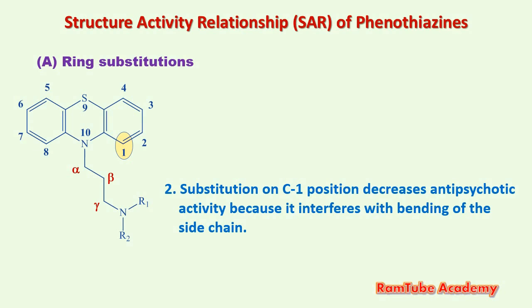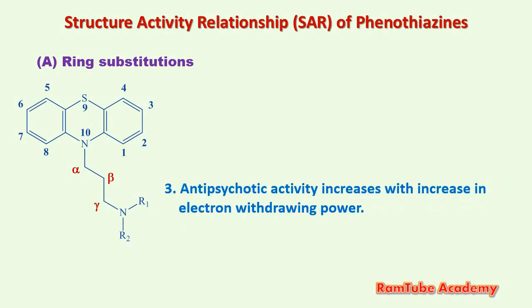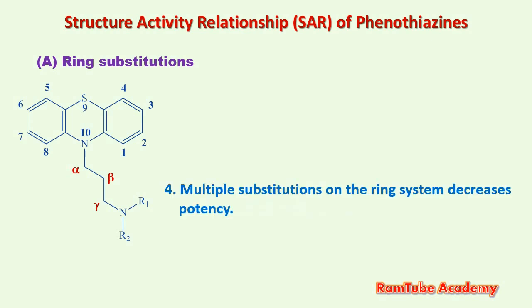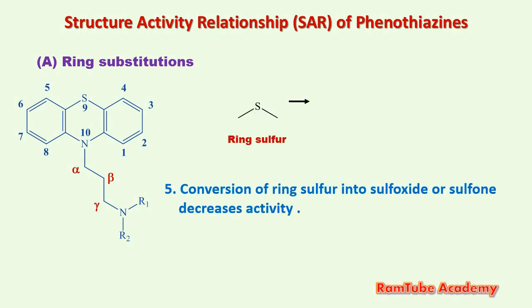Third point: antipsychotic activity increases with increasing electron-withdrawing power — as electron-withdrawing power increases, potency of the drug molecule increases. Fourth point: multiple substitutions on the ring system decrease potency. Fifth point: conversion of the ring sulfur into sulfoxide or sulfone decreases the activity.